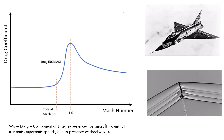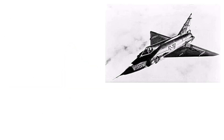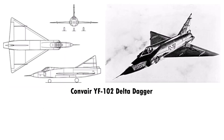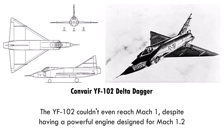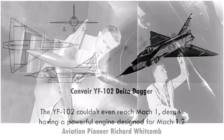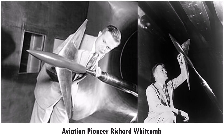The US Air Force hoped to build its first supersonic fighter, the F-102, but early test flights of its prototype showed it couldn't even reach Mach 1, despite having a powerful engine designed for Mach 1.2. The engineers were baffled by this lack of performance until a NACA researcher named Dr. Richard Whitcomb developed the area rule.